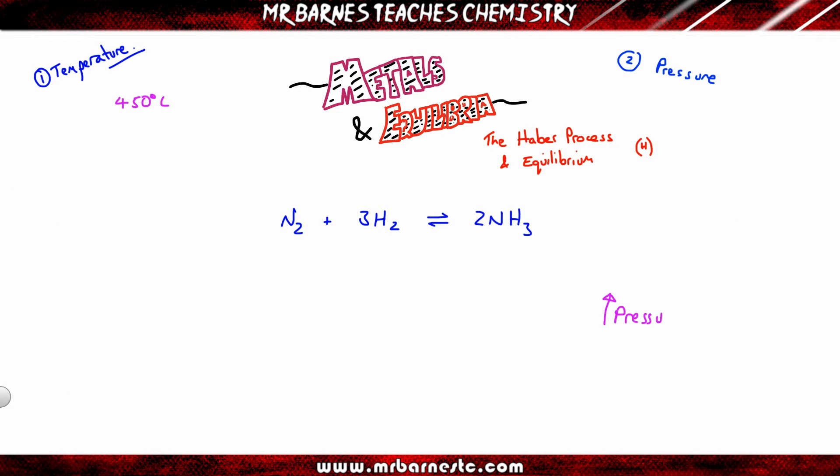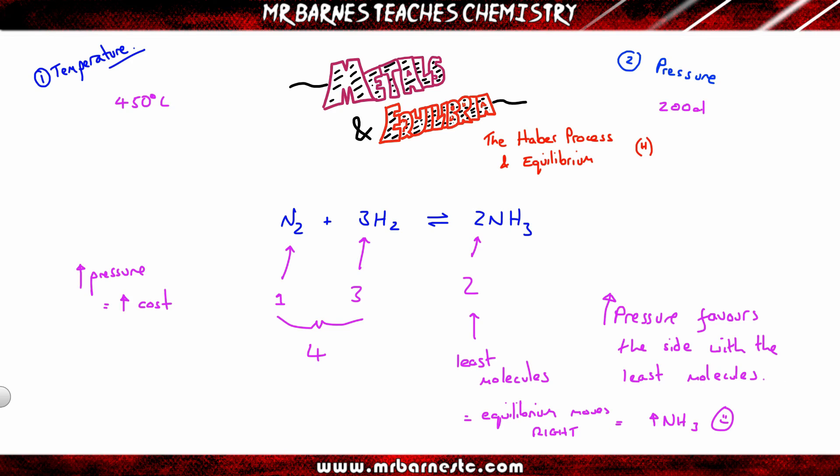The second main condition is increasing the pressure. If you increase the pressure, it will always favour the side with the least molecules. So you need to be able to look at any reaction and work out how many molecules you have on the left and on the right. On the left here, I've got one nitrogen molecule and three hydrogen molecules. So in total, I have four molecules on the left. On the right, I have two molecules. So my least molecules is on the right. If I increase the pressure, I will have equilibrium shifting to the right and therefore more ammonia. So that's a good thing. However, if you increase the pressure, it increases the cost. You've got to have a container that's strong enough to go to that pressure, and that costs a lot of money. So what we do is we go with 200 atmospheres. And again, that's a compromise between cost and yield.